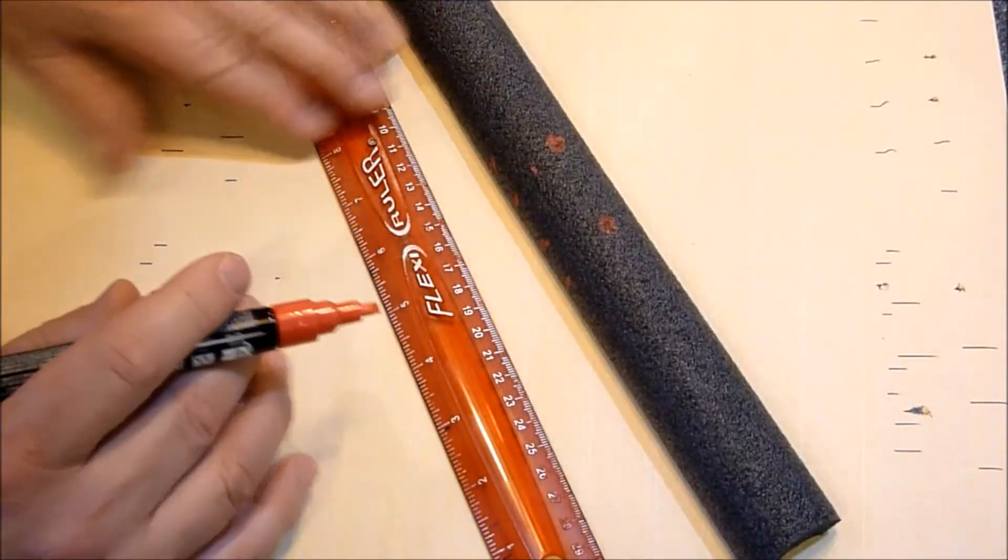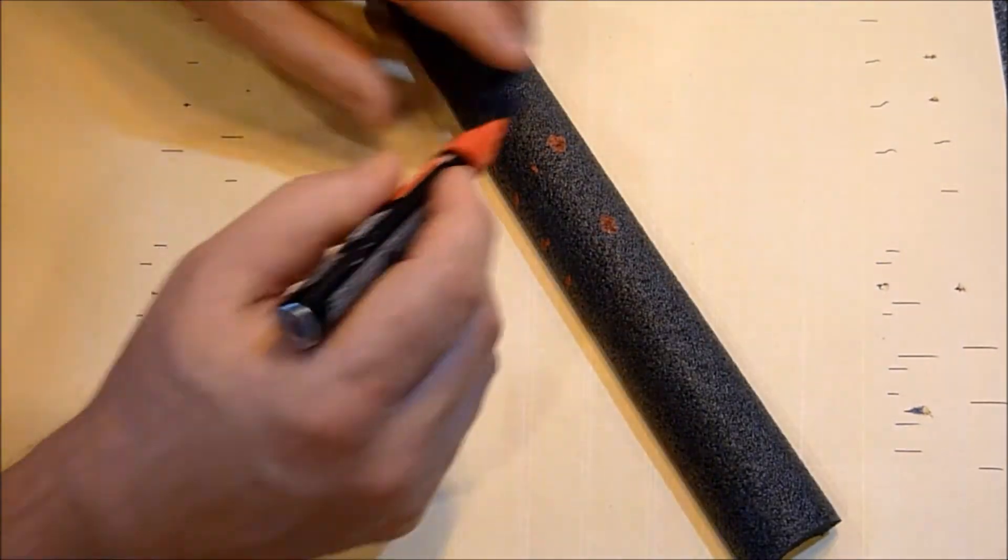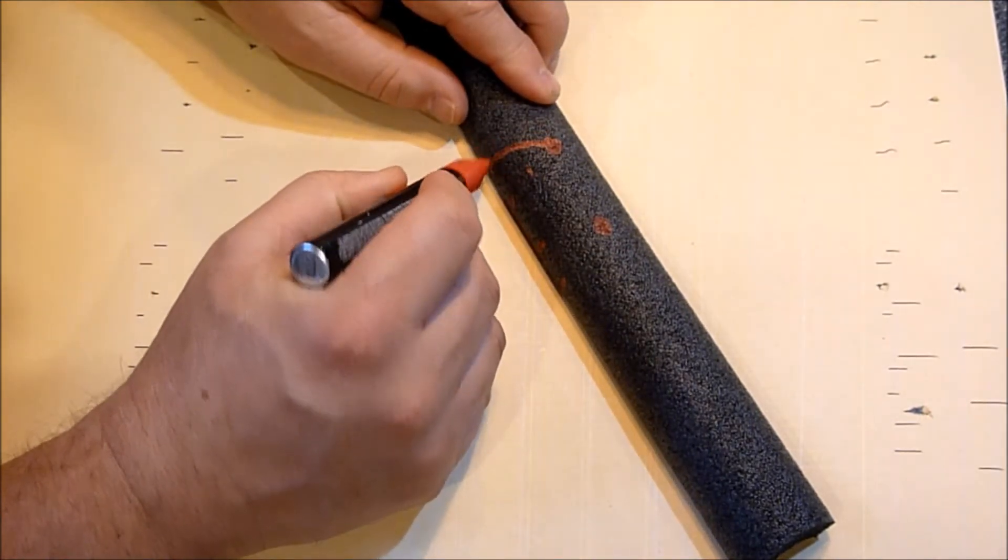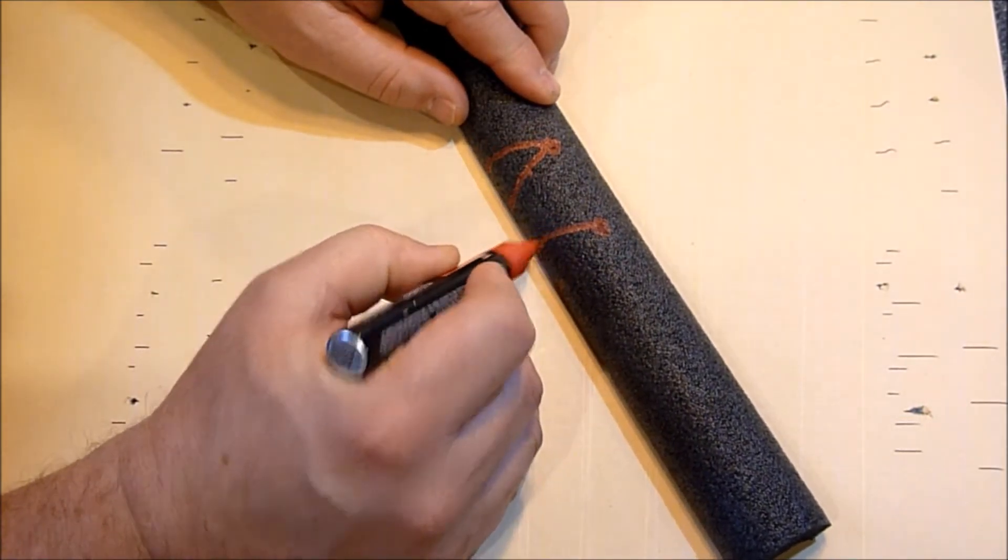Then all you do is draw your triangles. So you just draw your triangles and it should look something like that. Hopefully you can see that.